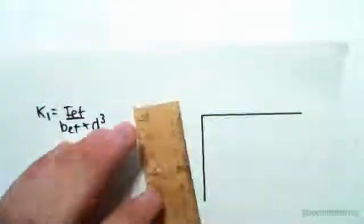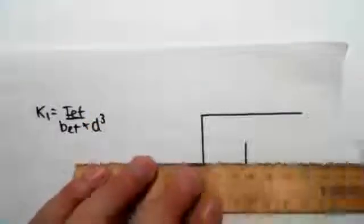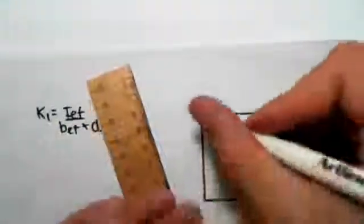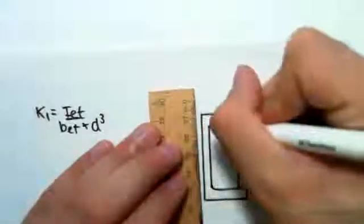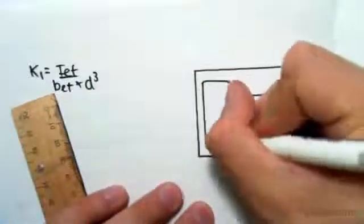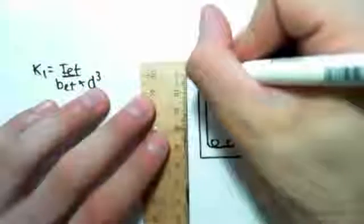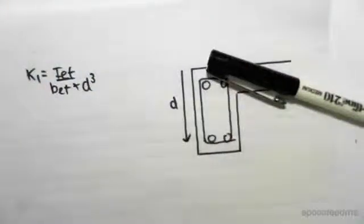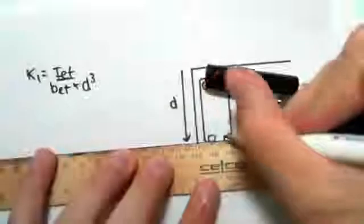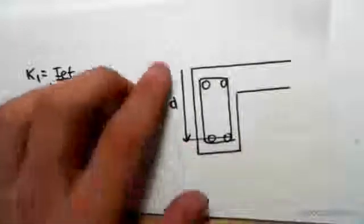So D is, if I redraw our beam and slab, we're going to have some type of stirrups in our beam and we're going to have reinforcing bars something like that. D is the distance from the top to the centroid of the reinforcing bars. So little d is this distance here.